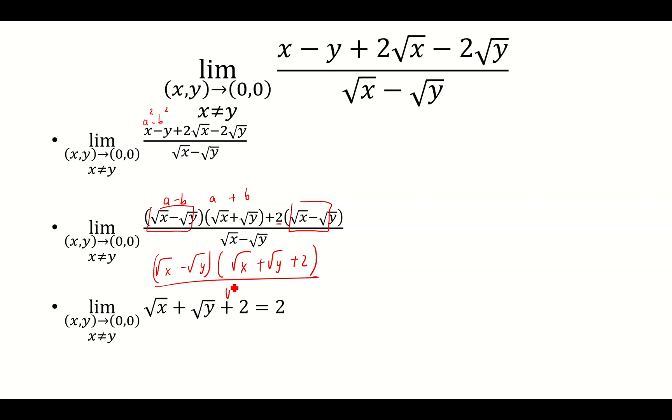And the denominator will have the square root of x minus the square root of y. The square root of x minus square root of y is going to cancel. I'm left with the square root of x plus square root of y plus 2.